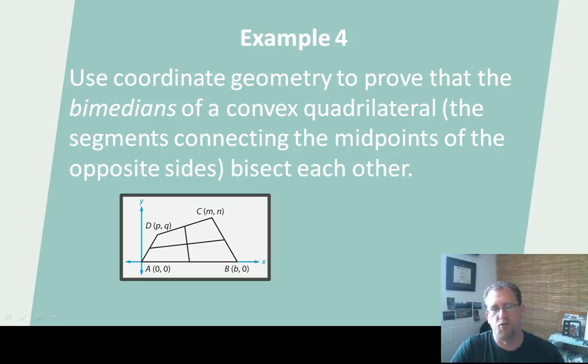We can use coordinate geometry to prove that the bi-medians of a convex quadrilateral, the segments connecting the midpoints of the opposite sides, bisect each other. So here is a scalene quadrilateral. None of the sides are the same way. And I have the bi-median here, and I have the bi-median here. And they are bisecting each other. That's what we're trying to prove. It's kind of an interesting thing.